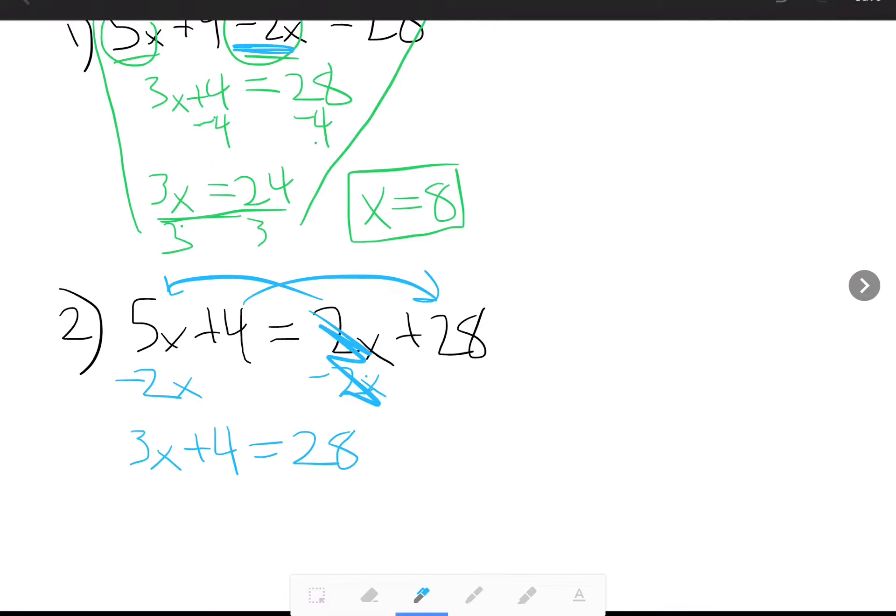And so now I'm looking at 3x plus 4 is equal to 28. And again, that's the goal. I want to make this to a two-step equation. I repeat the process, subtract 4 from both sides. And so now I have 3x is equal to 24 divided by 3 divided by 3, x equals 8. So big takeaway here is to make sure that you put variables on one side, numbers on the other side.